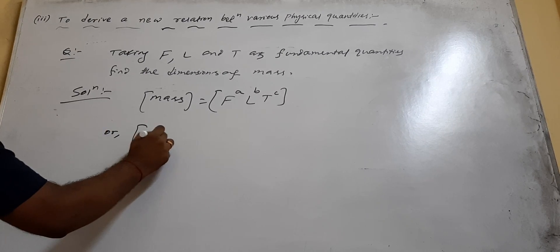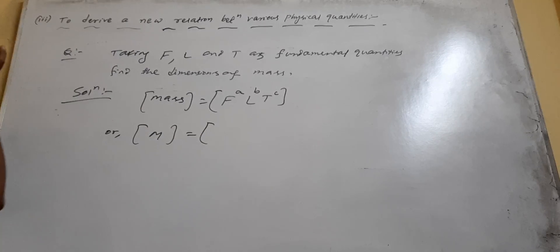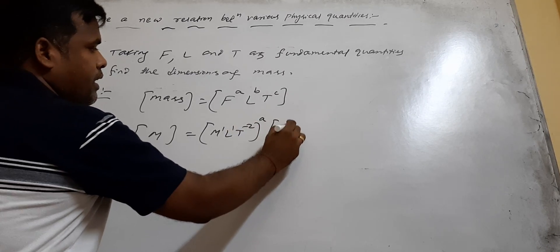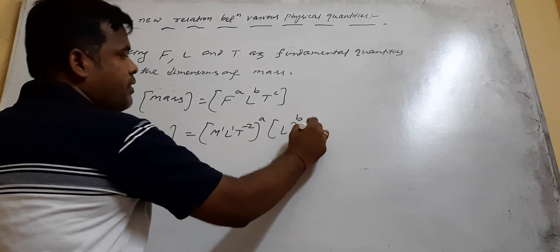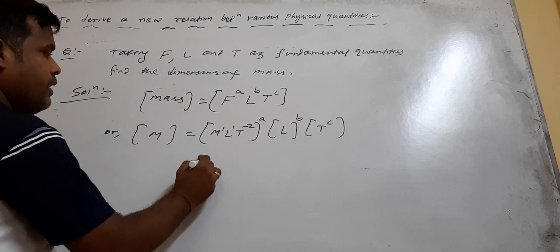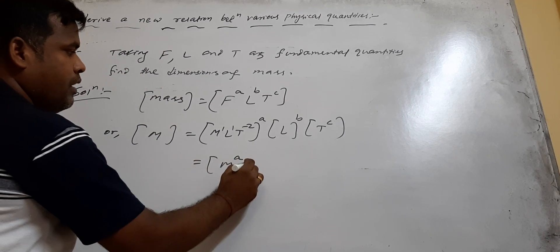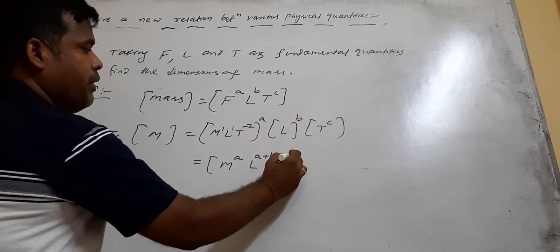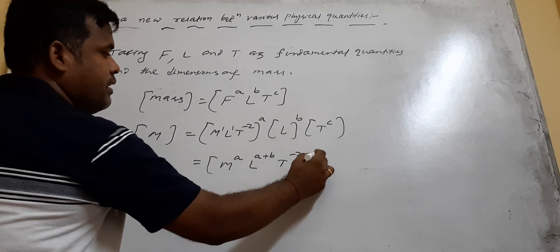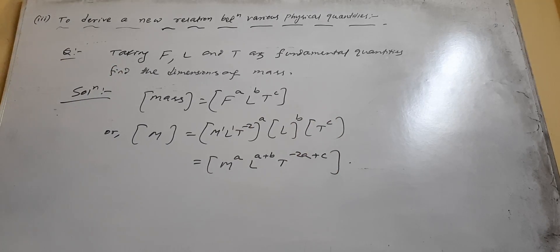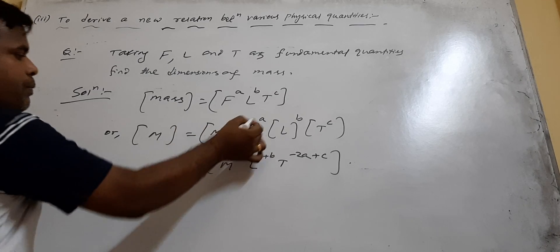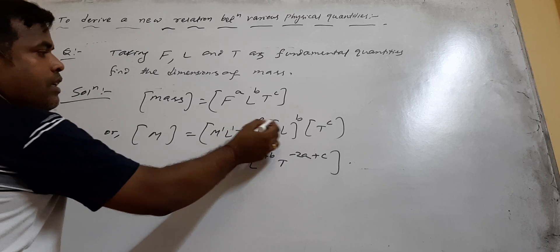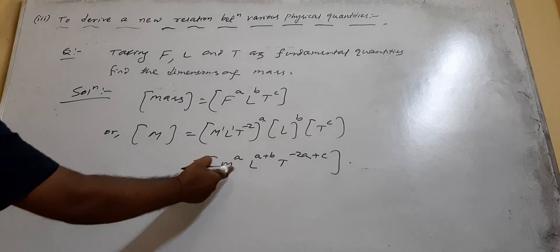Mass is M. Force is M¹L¹T⁻², so substituting: M equals (M¹L¹T⁻²)^A · L^B · T^C, which gives M^A · L^(A+B) · T^(−2A+C). Comparing: M to the power A on the right must equal M to the power 1, so A equals 1. There is no L on the left side, so A plus B equals 0. And there is no T, so minus 2A plus C equals 0.